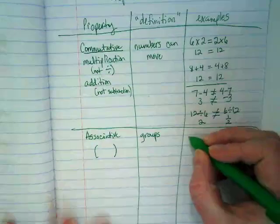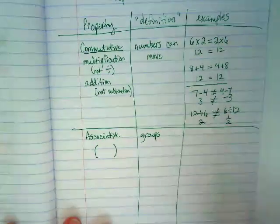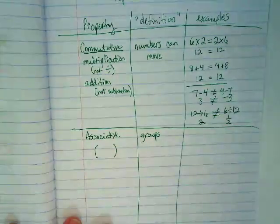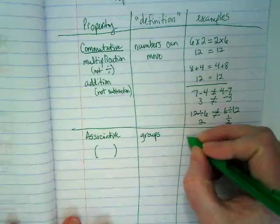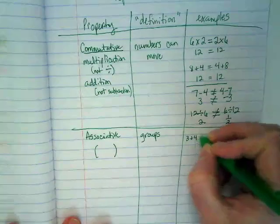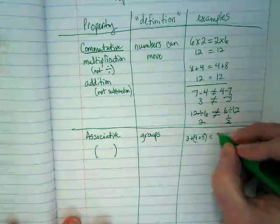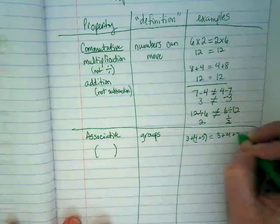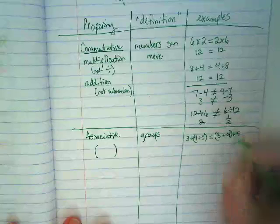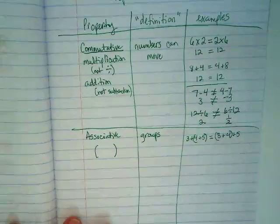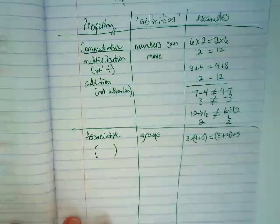Quick example: the numbers don't change place, they just get grouped differently. So (3+4)+5 equals 3+(4+5). What's different is the numbers that I grouped. Because I have parentheses, I have to do what's in the parentheses first because of order of operations.